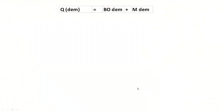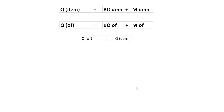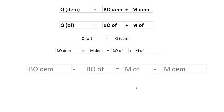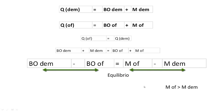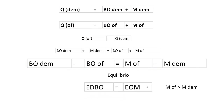La riqueza demandada será igual a la demanda de bonos — que incluye propiedades, acciones, oro, pinturas, etc. — más la demanda de dinero. Y la riqueza ofertada será igual a la oferta de bonos más la oferta de dinero, que es fija y determinada por el Banco Central. En equilibrio, la riqueza ofertada es igual a la demandada. Cuando el dinero ofertado es mayor al demandado, hay un exceso de oferta monetaria, lo que implica un exceso de demanda de bonos, pues la cantidad de bonos demandados supera a los ofertados.